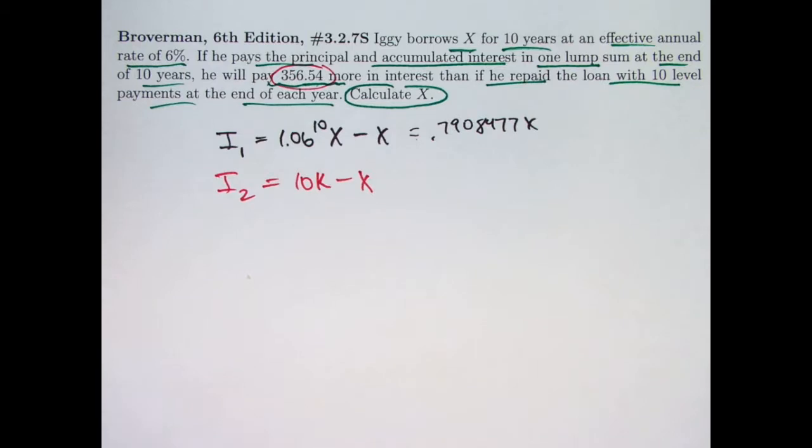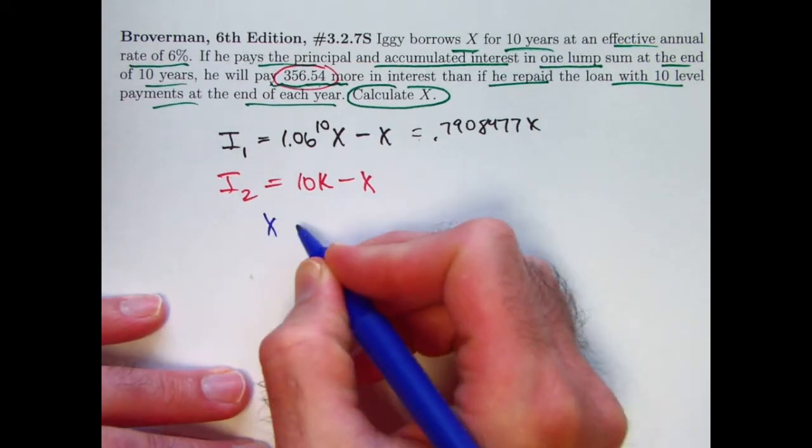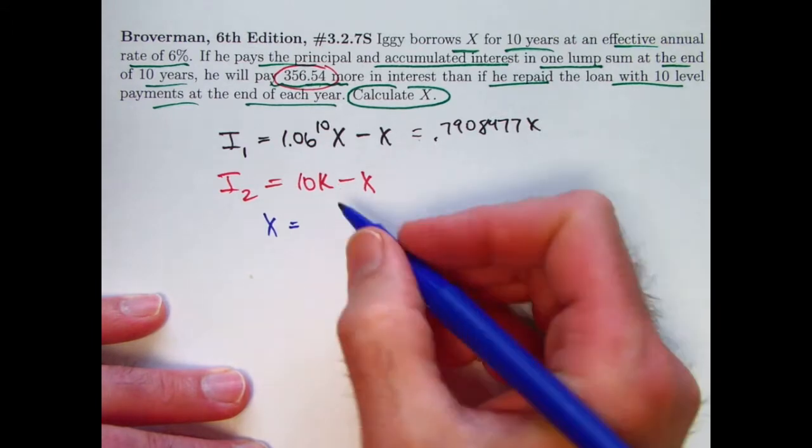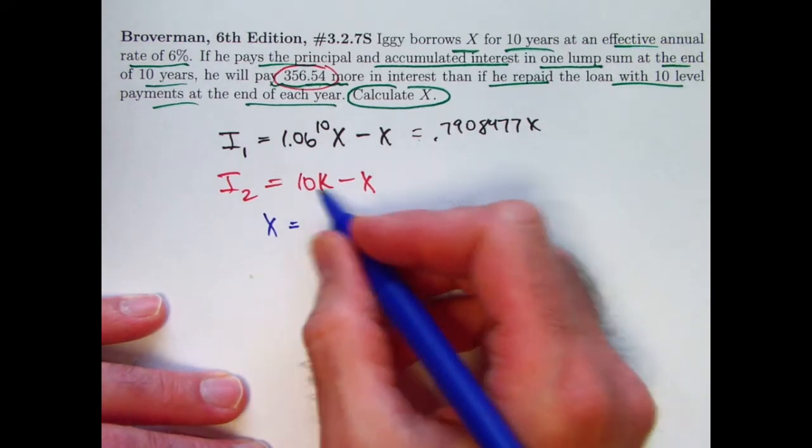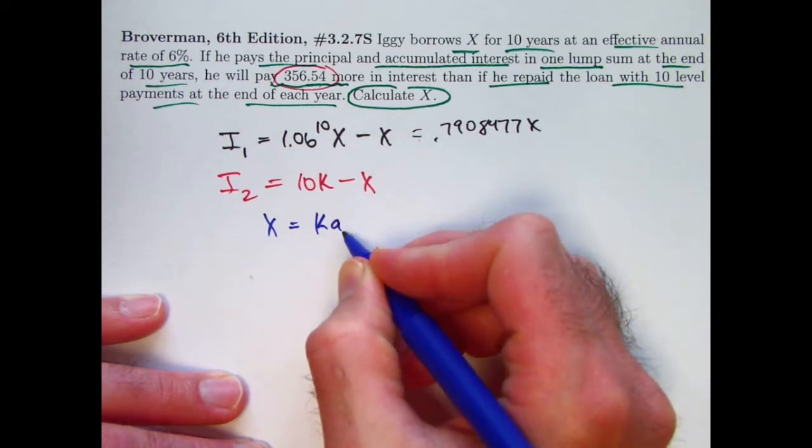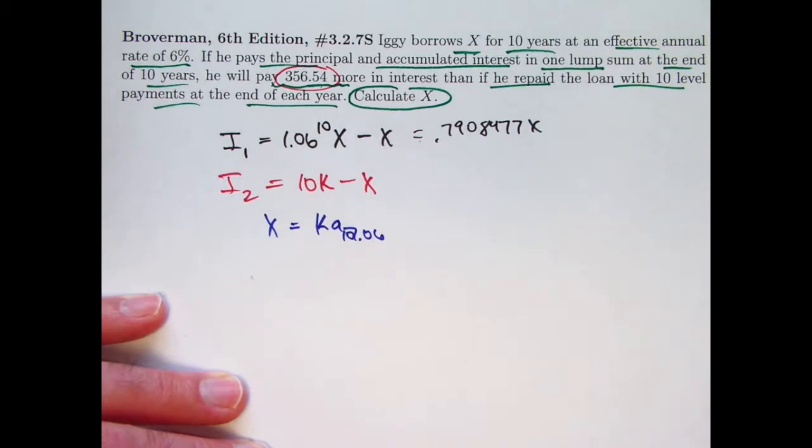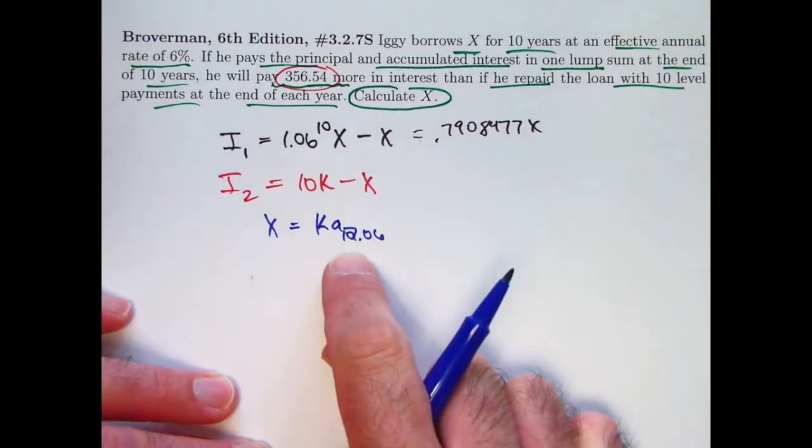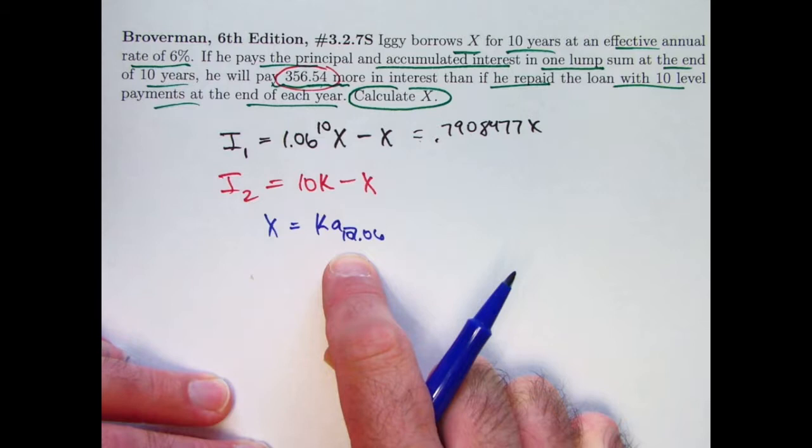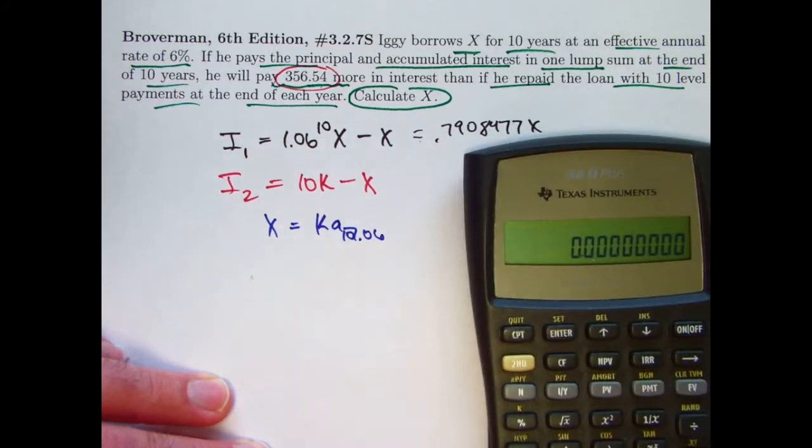We need to use the fundamental fact that the present value of the loan amount, X, at time 0, is the same as the present value of the annuity immediate, the payment stream, K times A-10 at 0.06. As we've been doing recently, you should be able to figure out what this thing is with your calculator very rapidly without bothering to write down the formula. This is something you should know in your head.